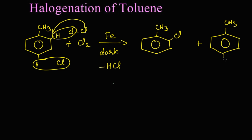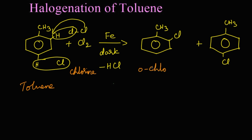The structure shows CH3 with Cl attached at the para position. To name the structures: toluene reacts with chlorine — chlorination takes place — giving ortho-chlorotoluene and para-chlorotoluene.